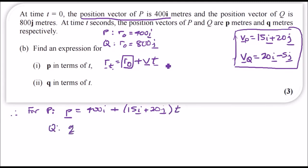The same thing for Q. Position vector q equals the initial position vector which is 800j plus the velocity Q which is 20i minus 5j times t. Voila, that's it.